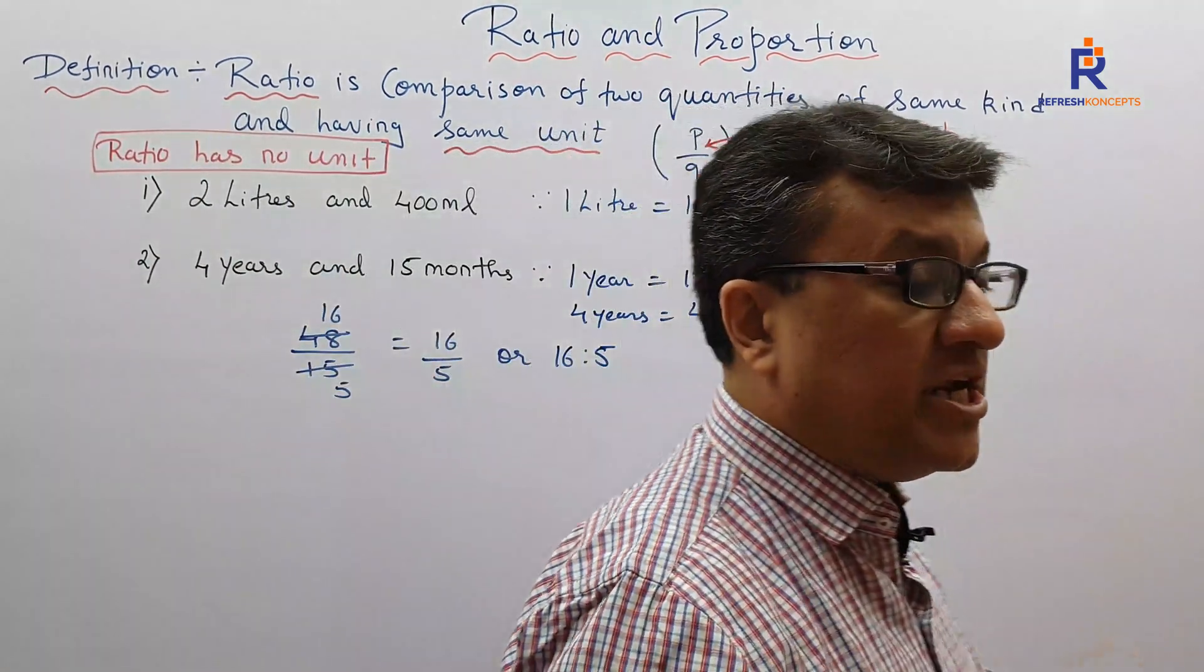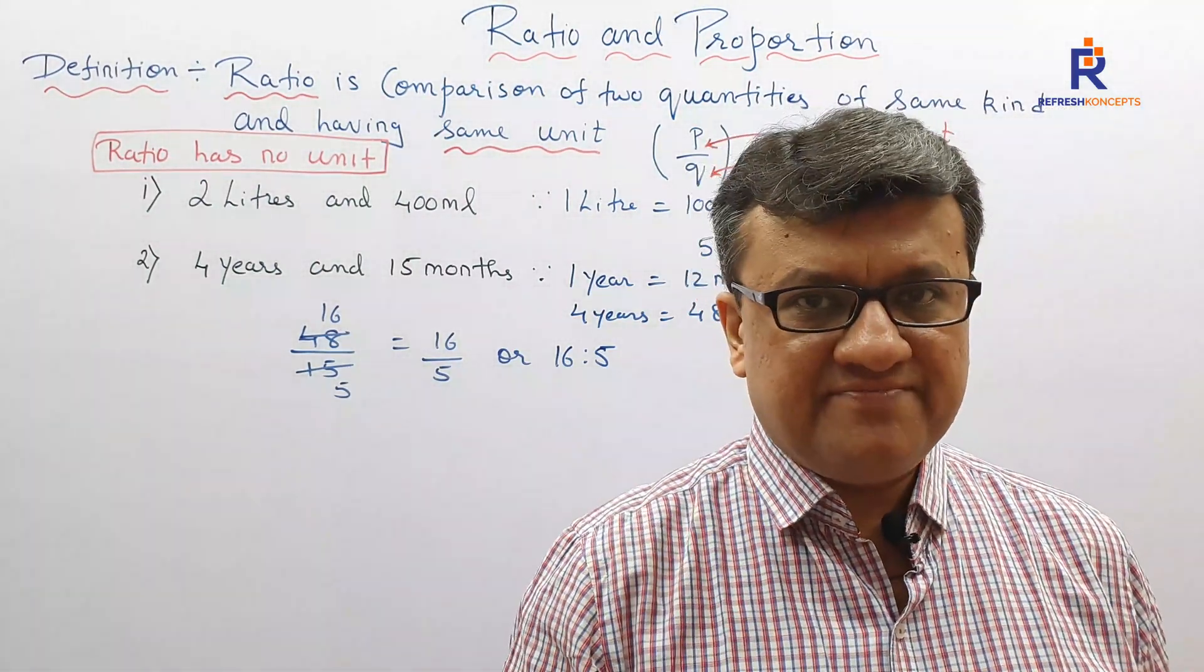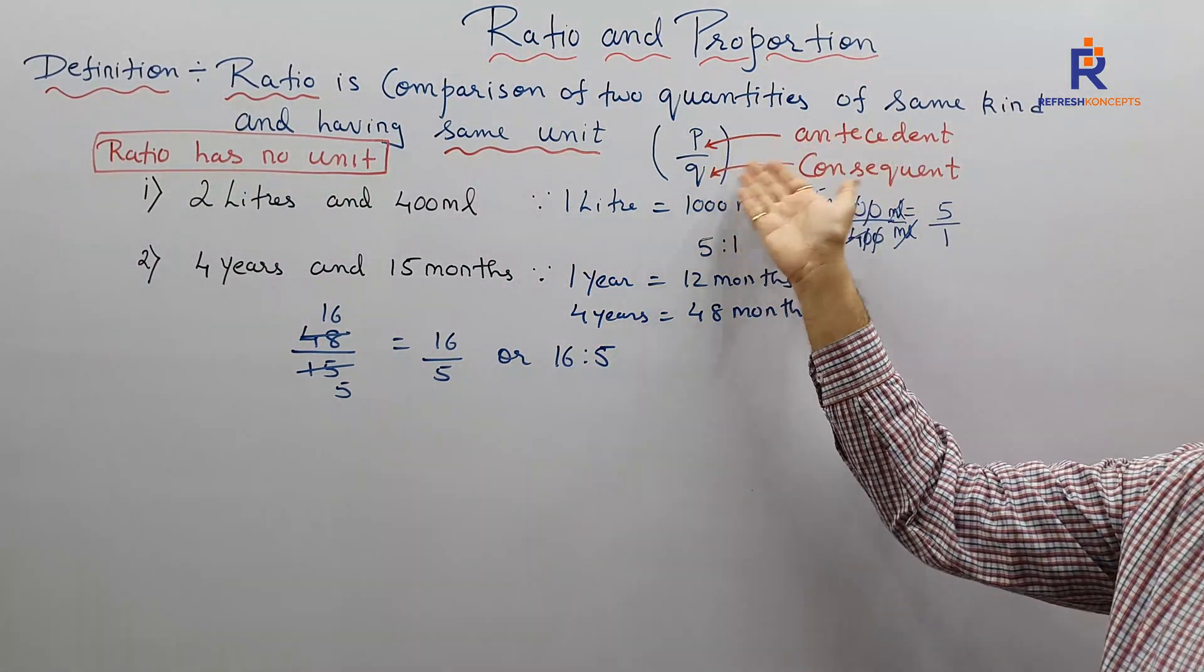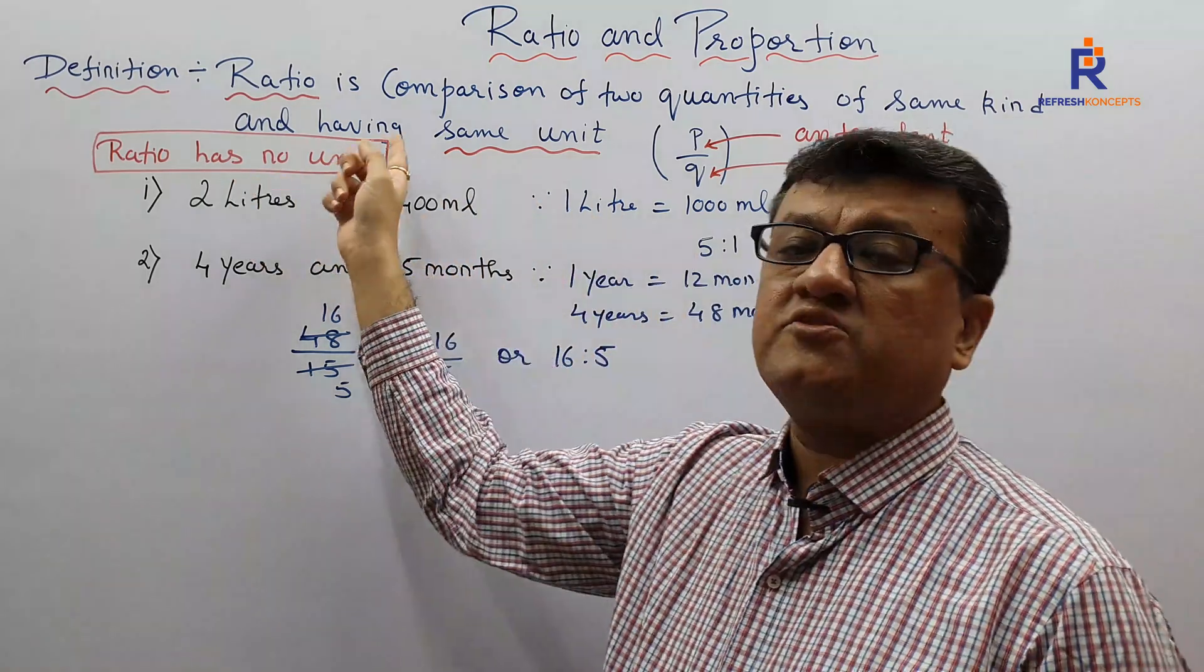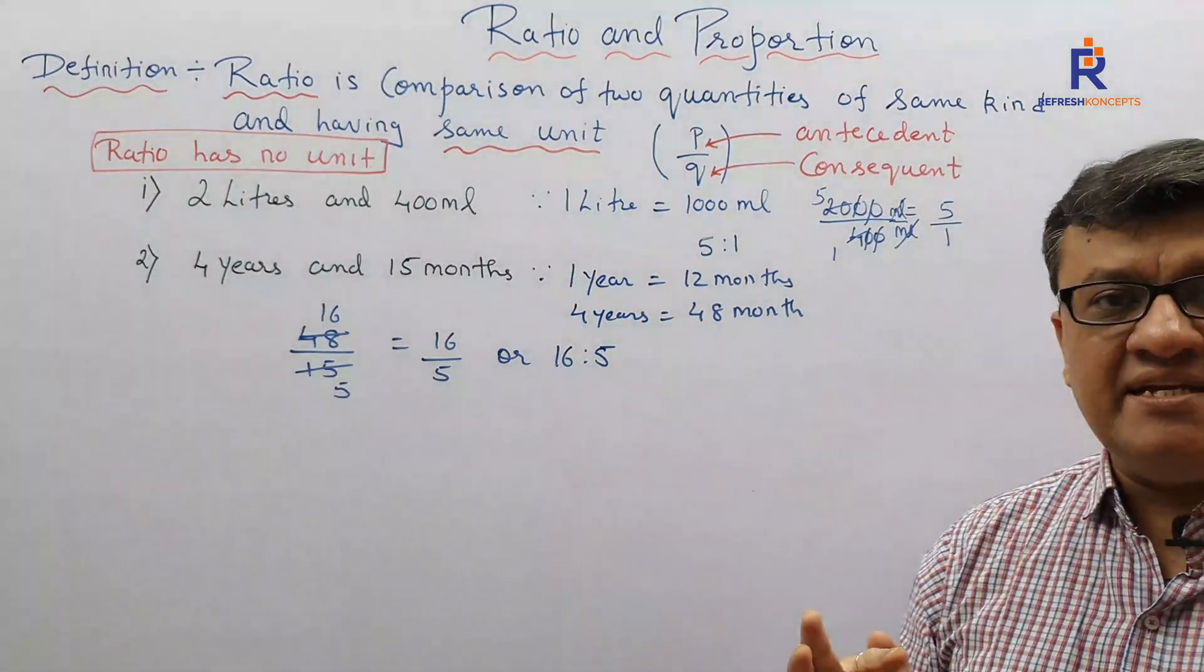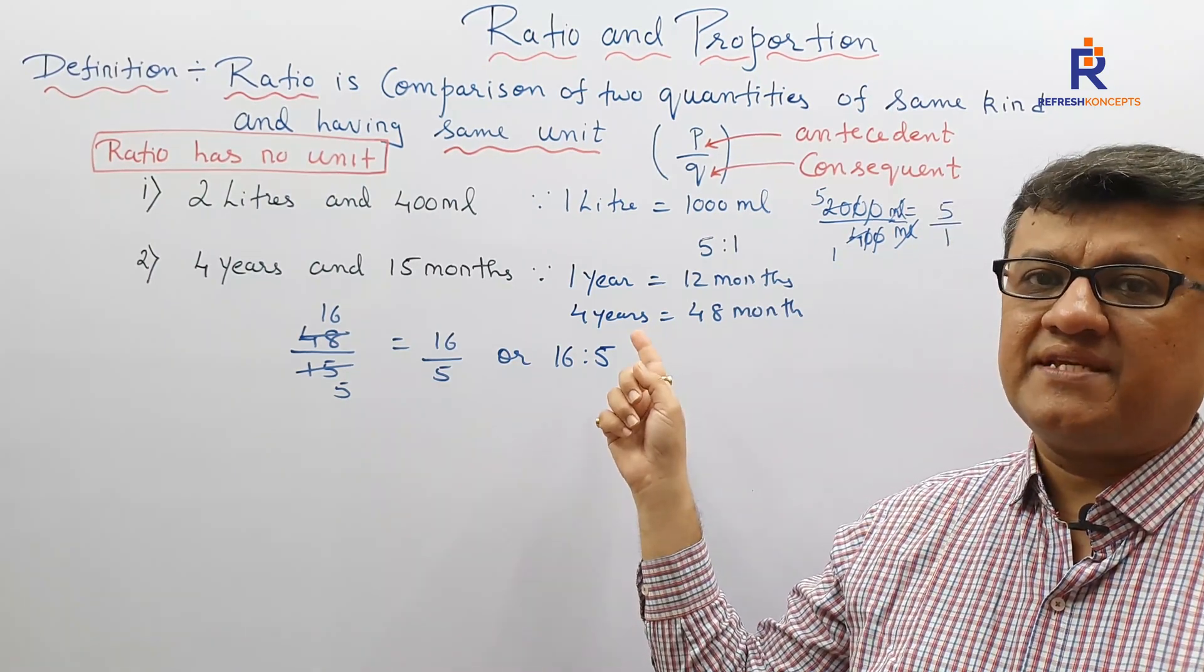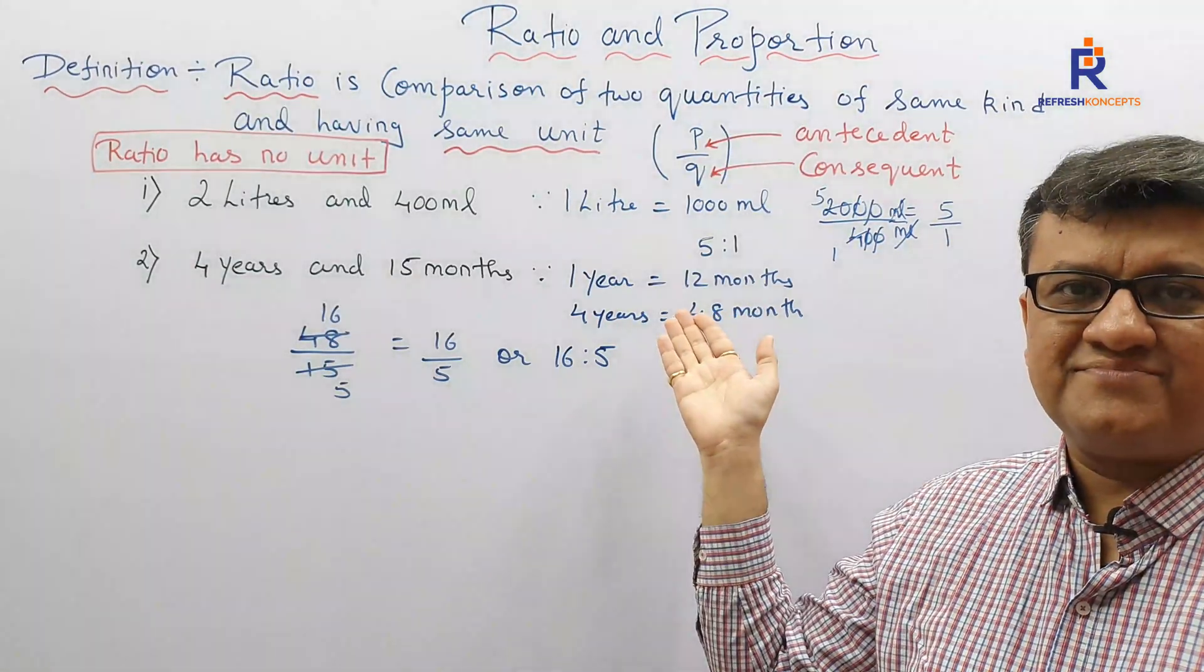So what is ratio, children? Ratio is comparison between two quantities having same units - two quantities of same kind having same units. In a ratio, the numerator is termed as antecedent, the denominator is termed as consequent, and we found out also ratio has no unit. These are the two examples whereby we need to understand that if the units are not same, we make the units same, and then only we go for comparison and get the reduced form of the ratio.